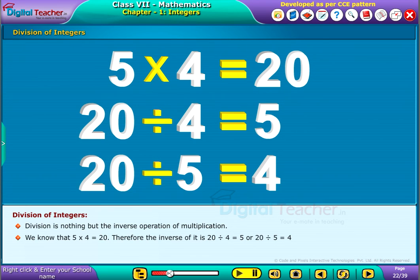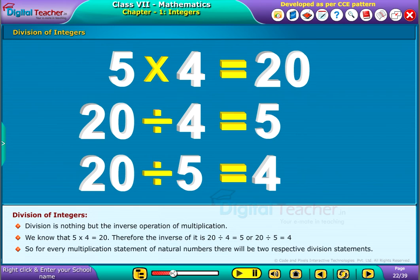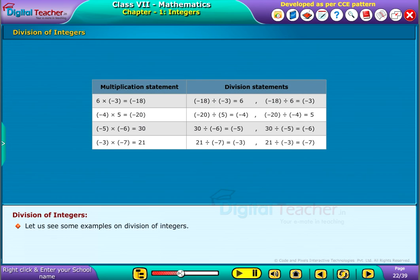5, or 20 divided by 5 equals 4. So for every multiplication statement of natural numbers, there will be two respective division statements. Let us see some examples on division of integers.